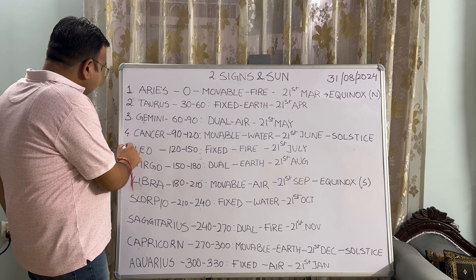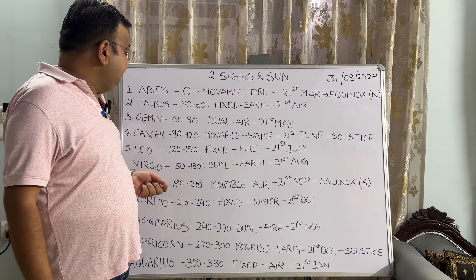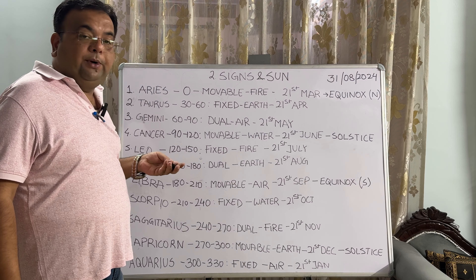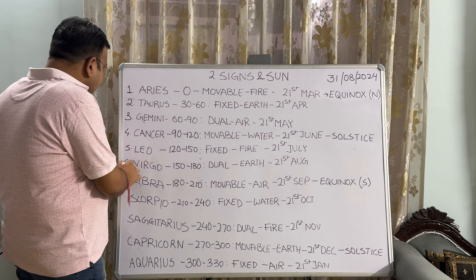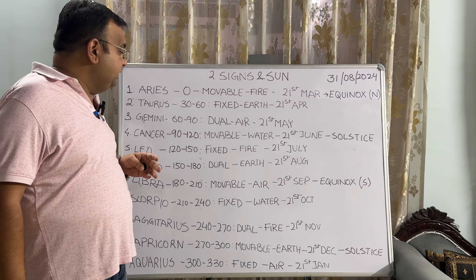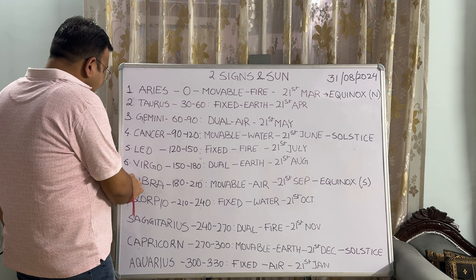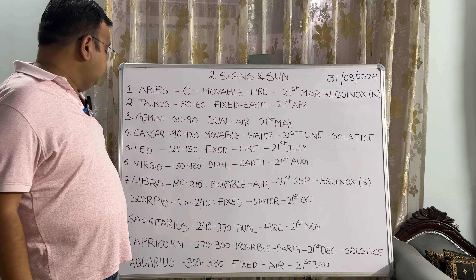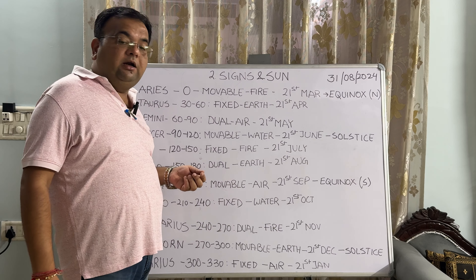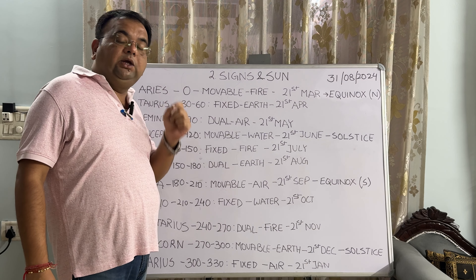The fifth sign is Leo. It extends from 120 degrees to 150 degrees, fixed in nature, and the sun enters into Leo on the 21st of July. The sixth sign is Virgo. Virgo extends from 150 degrees to 180 degrees, dual in nature, and the sun enters it on the 21st of August. The seventh sign is Libra. It extends from 180 degrees to 210 degrees, movable in nature, and the sun enters it on the 21st of September.